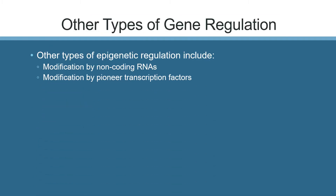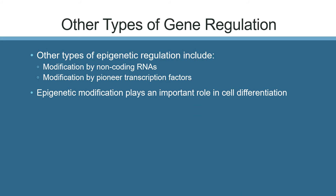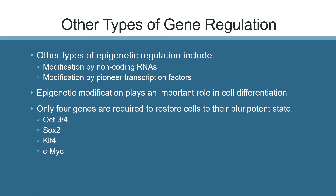Other types of epigenetic regulation include modification by non-coding RNAs and modification by pioneer transcription factors, but we won't cover either of these in great detail in this lesson. Epigenetic modification plays a very important role in cell differentiation. As you'll see in an upcoming video, only four genes are required to restore cells to their pluripotent state, as scientists discovered when they created inducible pluripotent stem cells.